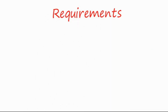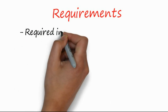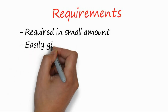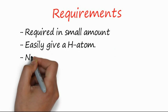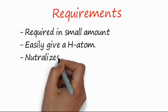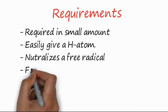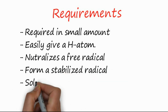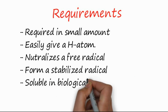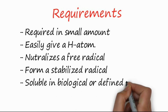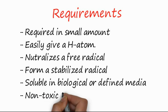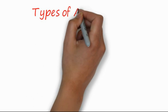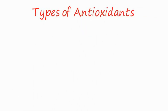What are the requirements of a compound to be an antioxidant? Those substances are usually required in a small amount, are those which donate a proton or hydrogen atom very easily, which neutralize a free radical, which form a stabilized radical, and which are soluble in the biological or defined media. Usually they should also be non-toxic to humans.